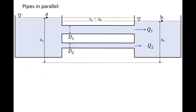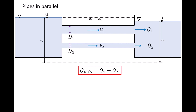Now let's look at a system where the flow can travel through pipes in parallel. Here we have two water reservoirs connected by two pipes. The reservoir on the left has a free surface at point A and the reservoir on the right has a free surface at point B. We will assume the elevation difference ZA minus ZB is known. Since free surface A is at a higher elevation, water flows from the left reservoir to the right through the two pipes. A volumetric flow rate Q1 flows through pipe 1 and Q2 flows through pipe 2, so QAB equals Q1 plus Q2. If the pipe diameters D1 and D2 are different, the speeds and flow rates will differ.